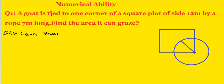Now, the goat is tied at the corner of the square plot of side 12 meters by a rope 7 meters long. This is r. Here is the goat — understand the diagram.